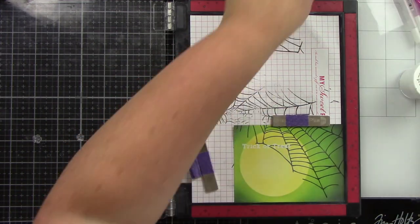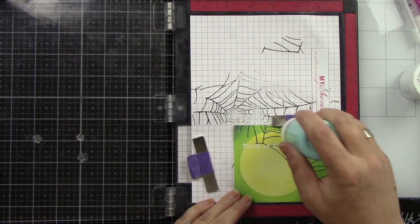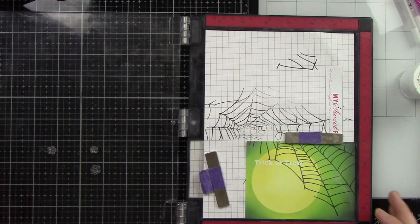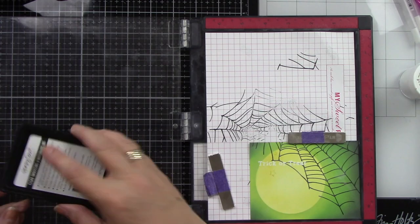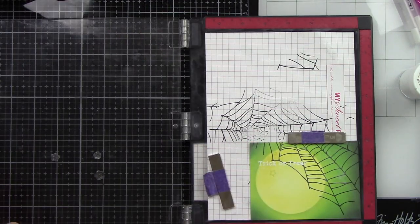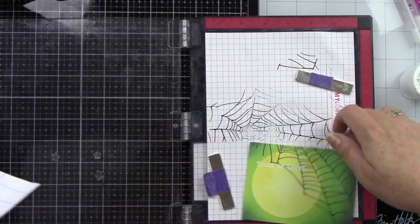I'm going to do some white heat embossing there. I brought in my images to know where to lay everything out. Prepping with my powder tool, stamping with Honeybee Stamps clear embossing ink, then sprinkling on white embossing powder.